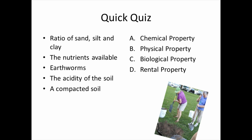Let's do a quick quiz. The ratio of sand, silt, and clay is a physical property — that's texture. Available nutrients are a chemical property. Earthworms are a biological property. The acidity of the soil is a chemical property. And compacted soil — associated with structure and pore spaces — is a physical property.